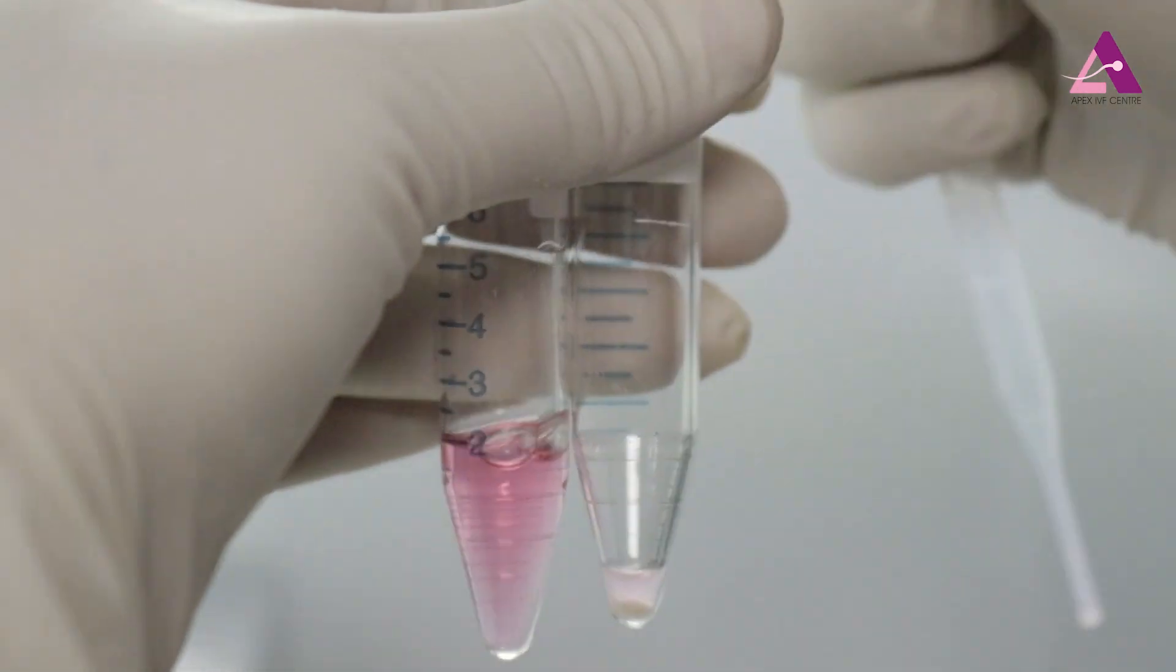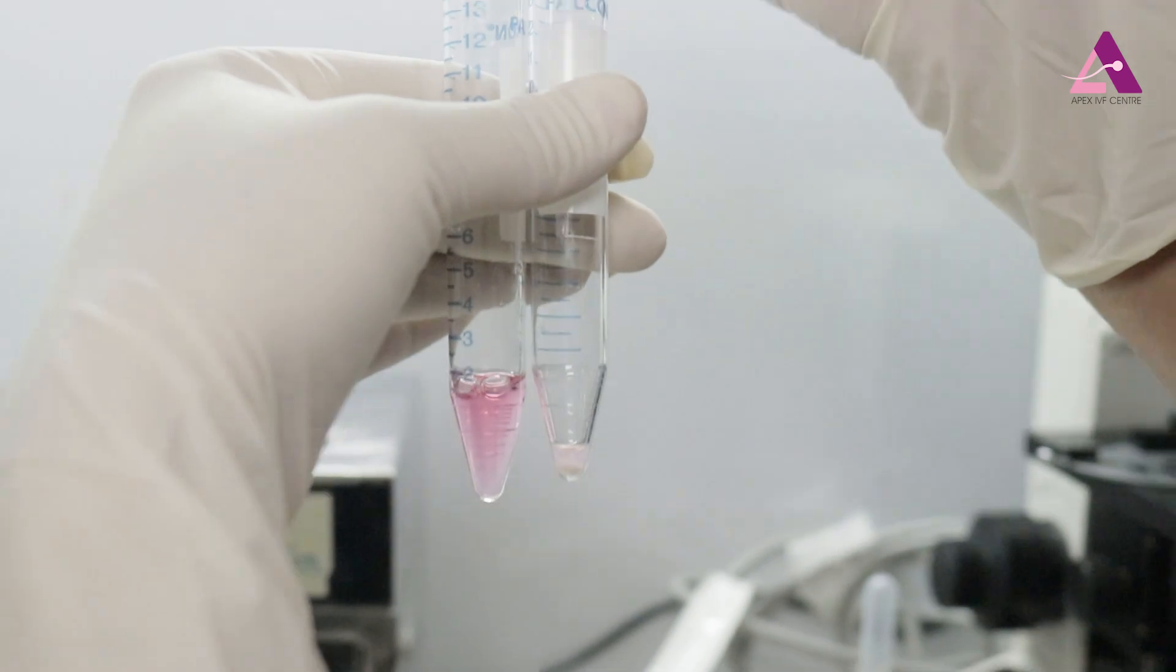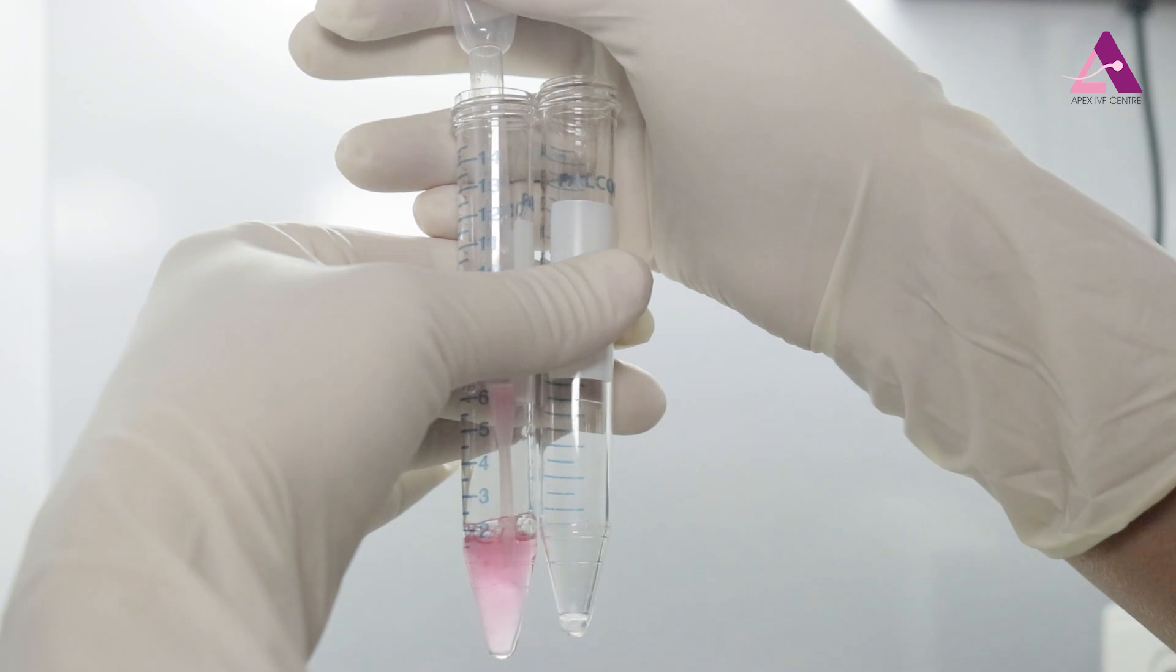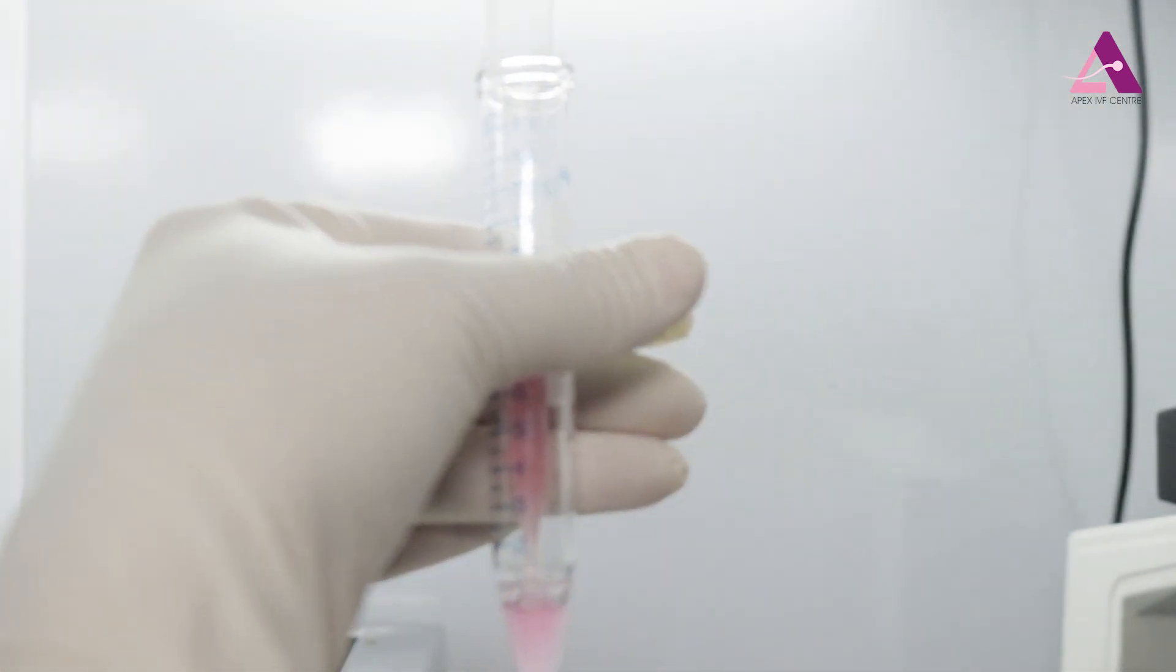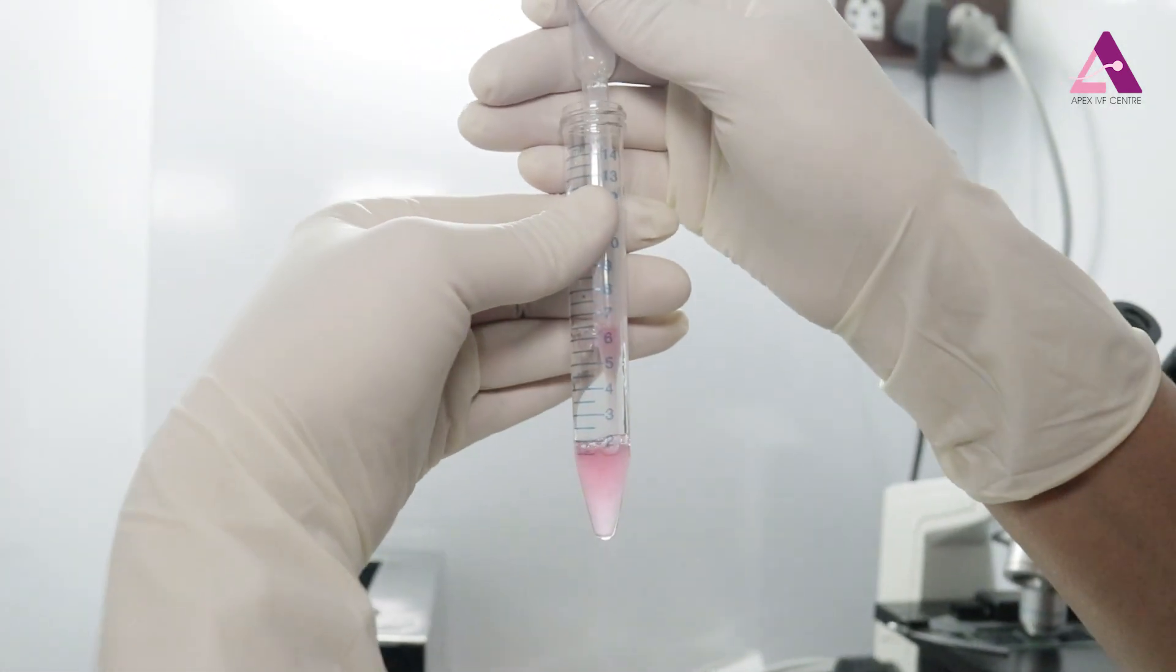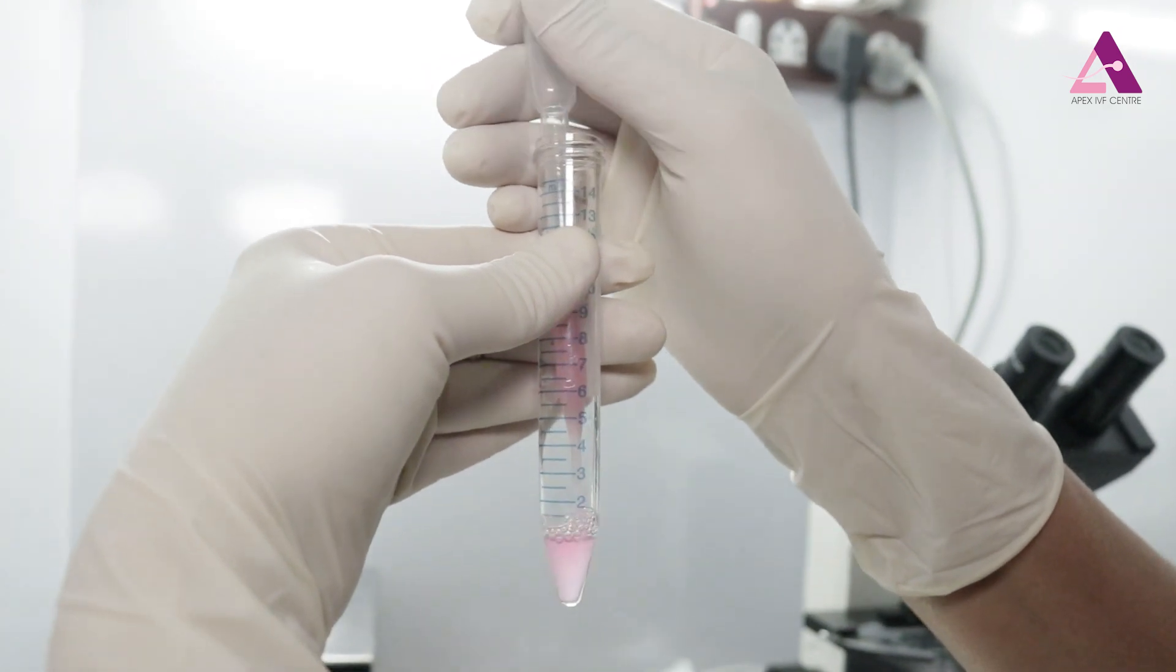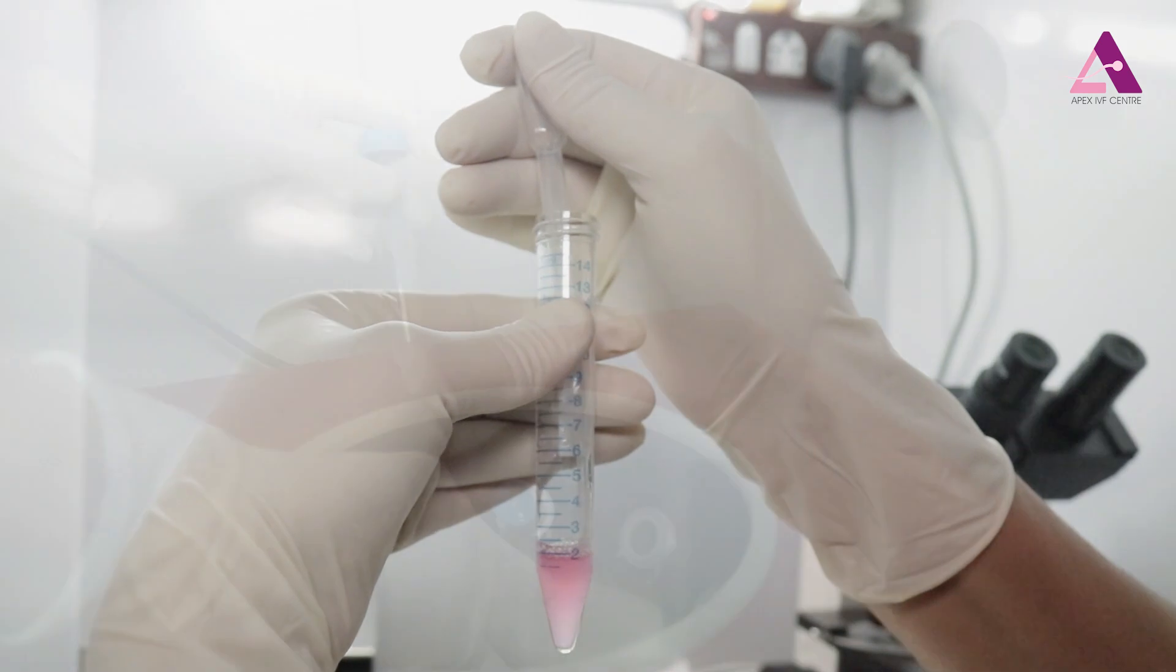Since we want to do a double wash, we are going to shift the bead. The bead has usually caught the good sperms, so it is mixed with the media once again. And the second time we are going to centrifuge it once again. But this time the centrifuge will be only for 5 minutes.